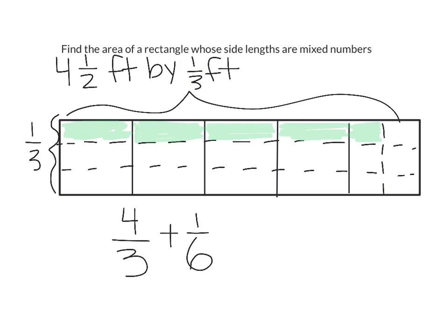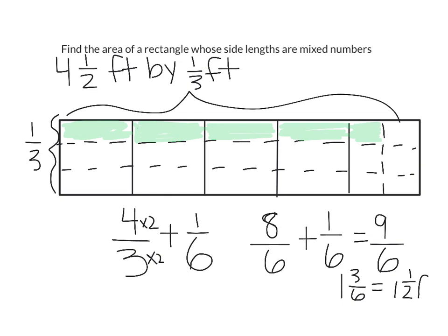Now, in order to be able to add 4/3 plus 1/6, we need to have a common denominator, which will be 6. So, we need to multiply 4 and 3 by 2. So, 4/3 would become 8/6, which we would add to 1/6, which would give us 9/6. We'd have to change 9/6 back into a mixed number, which would be equal to 1 and 3/6, which would simplify even further to 1 1/2 square feet.